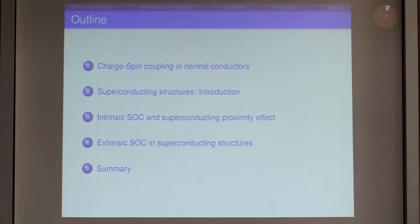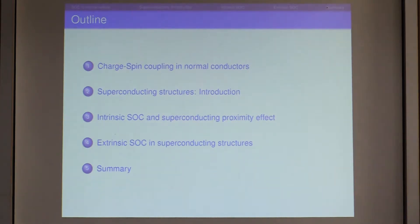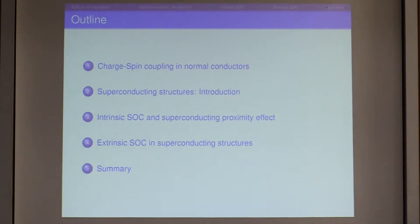I'll start by reviewing the description of spin and charge coupling in normal conductors, then discuss the standard description of the proximity effect in diffusive superconducting structures, and consider how intrinsic spin-orbit coupling enters the theory of the superconducting proximity effect. If time permits, I will also discuss extrinsic spin-orbit coupling due to spin-orbit coupling at random impurity potentials.